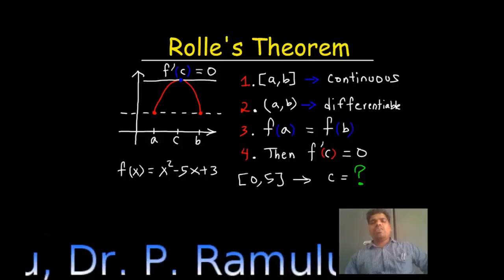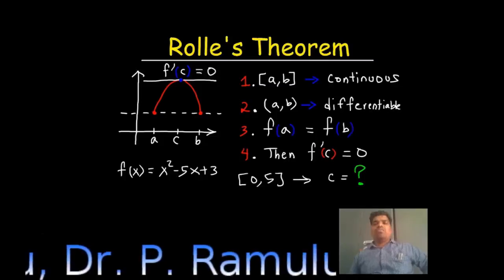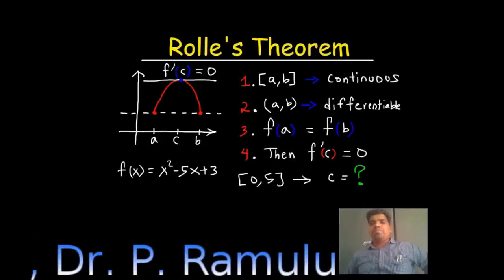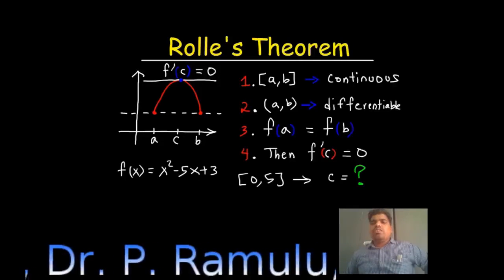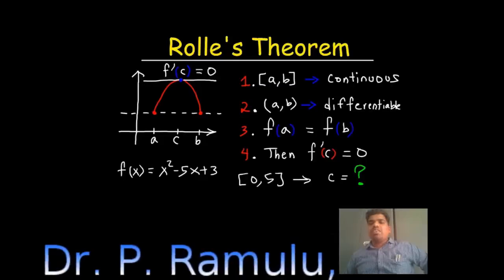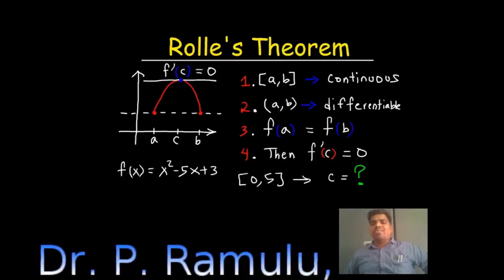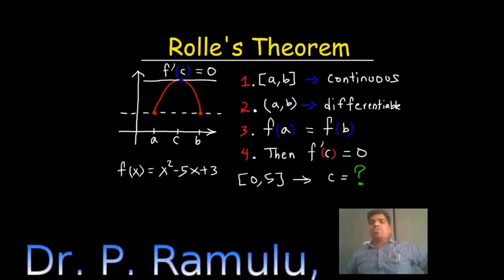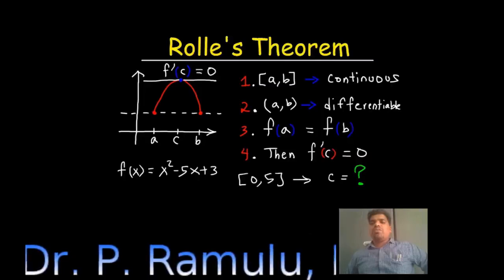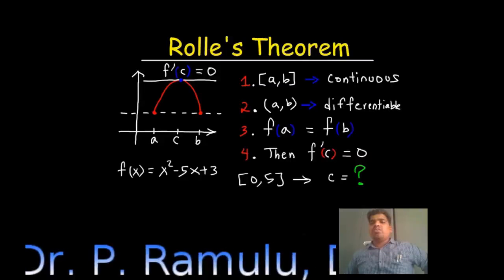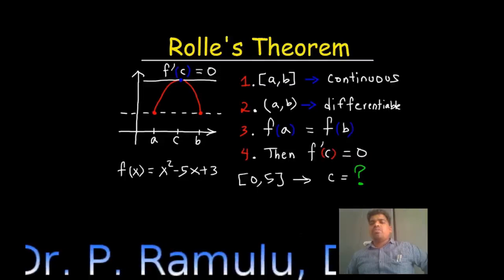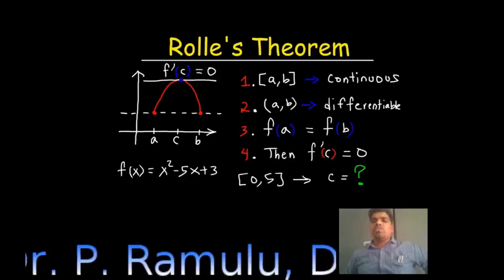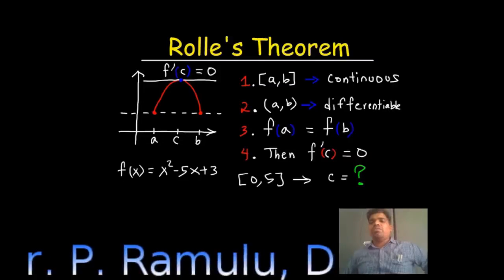Let's look at an example. f(x) equals x squared minus 5x plus 3. This is a polynomial function, so it is clearly continuous as well as differentiable. We compute f(0) equals 0 minus 0 plus 3, which equals 3. And f(5) equals 25 minus 25 plus 3, which also equals 3.